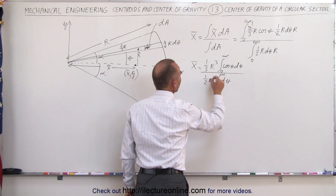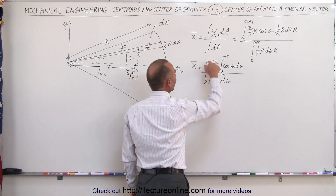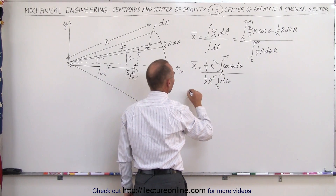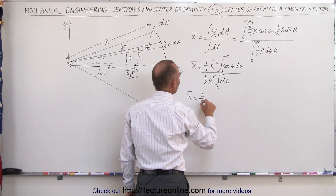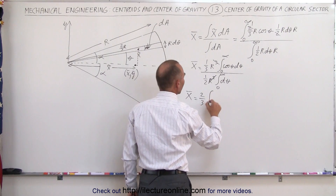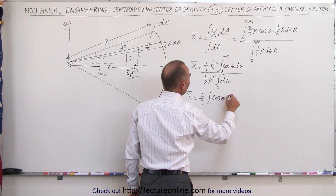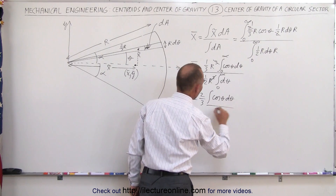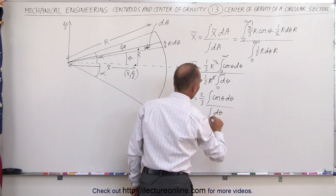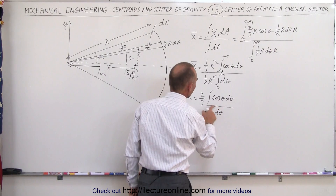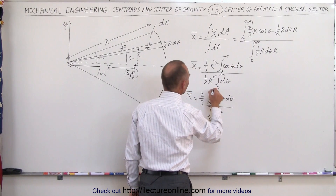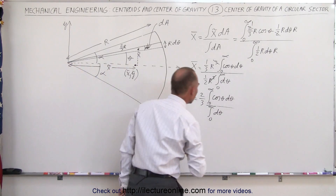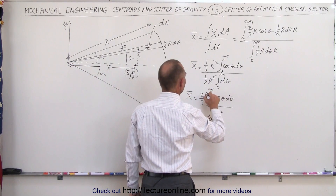Simplifying: we have r cubed over r squared, which gives r; and one-third divided by one-half gives two-thirds. So x̄ = two-thirds r times the integral of cos(θ) dθ divided by the integral of dθ, both from zero to alpha, and I need an r here.